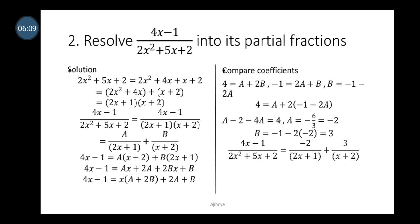The next question asks us to resolve (4x minus 1) over (2x squared plus 5x plus 2) into partial fractions. The first step is to factorize the denominator. Factorizing 2x² plus 5x plus 2 gives 2x² plus 4x plus x plus 2. Grouping and pairing, we get (2x plus 1)(x plus 2).